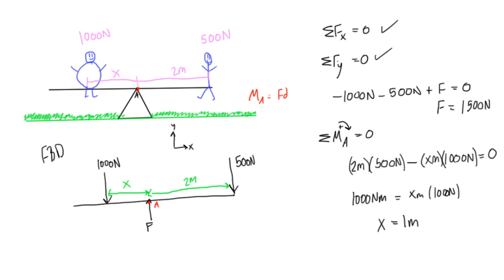This makes sense because the moment equation is directly proportional to both force and distance. If you double your force or weight, you have to be half as far away from the pivot point to create the same moment — just as if you were sitting twice as far but half as heavy.